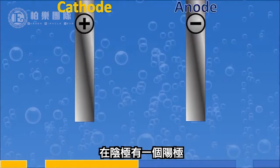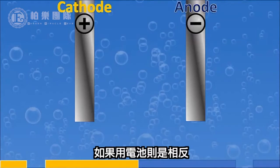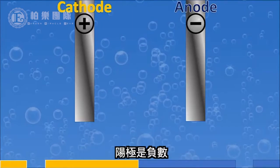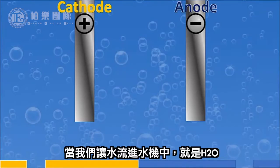We have an anode and a cathode — this is kind of reversed if we're using batteries, but in this case, because we are using alternating current, the cathode is minus and the anode is minus. So as we run our water through our machines...